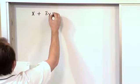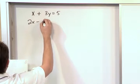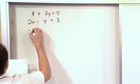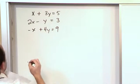So, x plus 3y is equal to 5. 2x minus y is equal to 3. Negative x plus 4y is equal to 9.